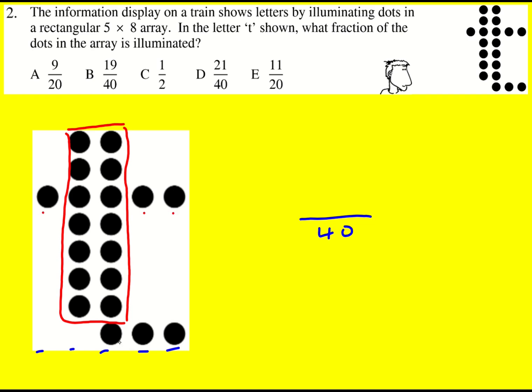Then 15, 16, 17, 18, 19, 20. In fact there's 20 out of the 40 illuminated and that cancels down to a half.